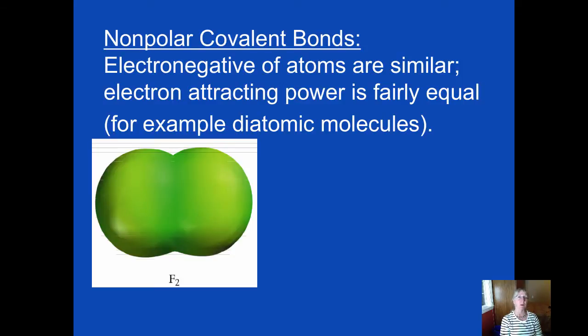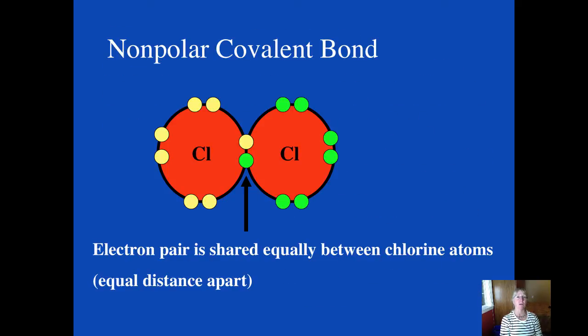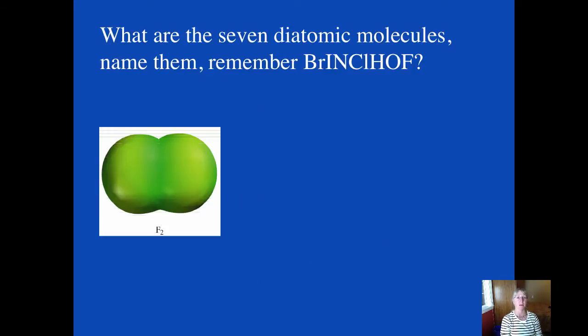We'll explain what the word polar means here in just a moment, but the attracting power that each fluorine atom has for the electrons is the same. Now if you take a look at it using a valence structure or electron dot structure here, you can see that that pair in the center, right here, is shared equally between the chlorine atoms. They're an equal distance apart, not closer to one side or the other.